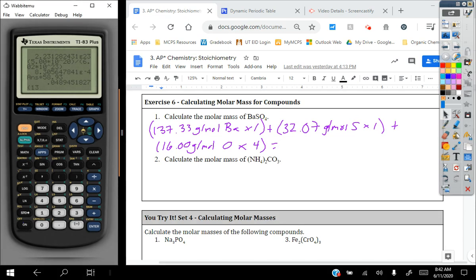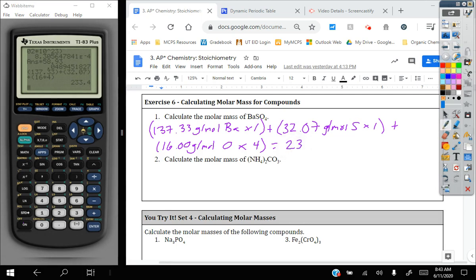When we add all of those together, we'll get our final mass. So 137.33 plus 32.07 plus 16 times four. And I get a final mass of 233.4. I always go to two decimal places. They didn't give us a second decimal place. So we know it's a zero. So 233.40 grams per mole is the molar mass for barium sulfate, BaSO4.